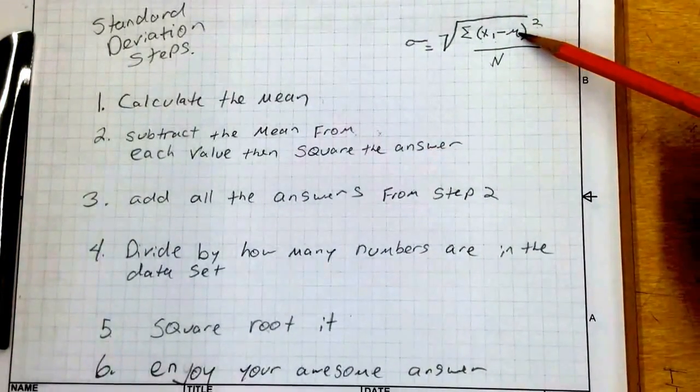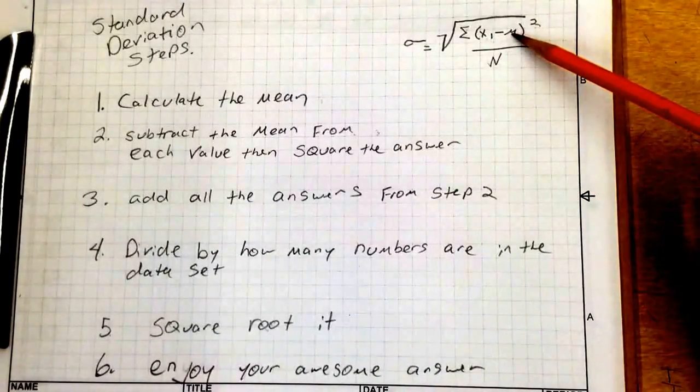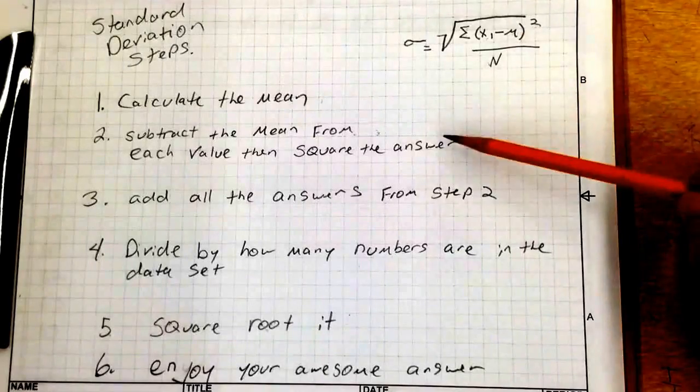We have the mean in that equation. Then you are going to subtract the mean from each value. Value, subtract the mean, and square the answer.